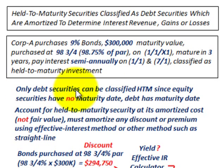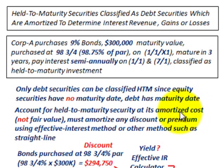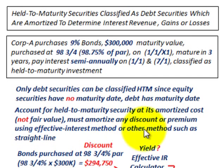Only debt securities can be classified as held-to-maturity, since equity securities have no maturity date. Debt has a maturity date, and we can classify them as held-to-maturity securities if we intend to hold them until they mature. To account for held-to-maturity securities, you have to account for them at their amortized cost, not at their fair value. You must amortize any discount or premium using either the effective interest method or another method such as straight-line amortization.